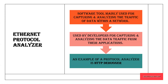To detect and avoid collision of frames traveling from one end to the other, an Ethernet protocol analyzer is used. A best example of this analyzer is HTTP Debugger. It is a software tool used for capturing and analyzing the traffic of data in the network — monitoring how much data is formed, whether it is correctly following the path, or whether there is any collision.